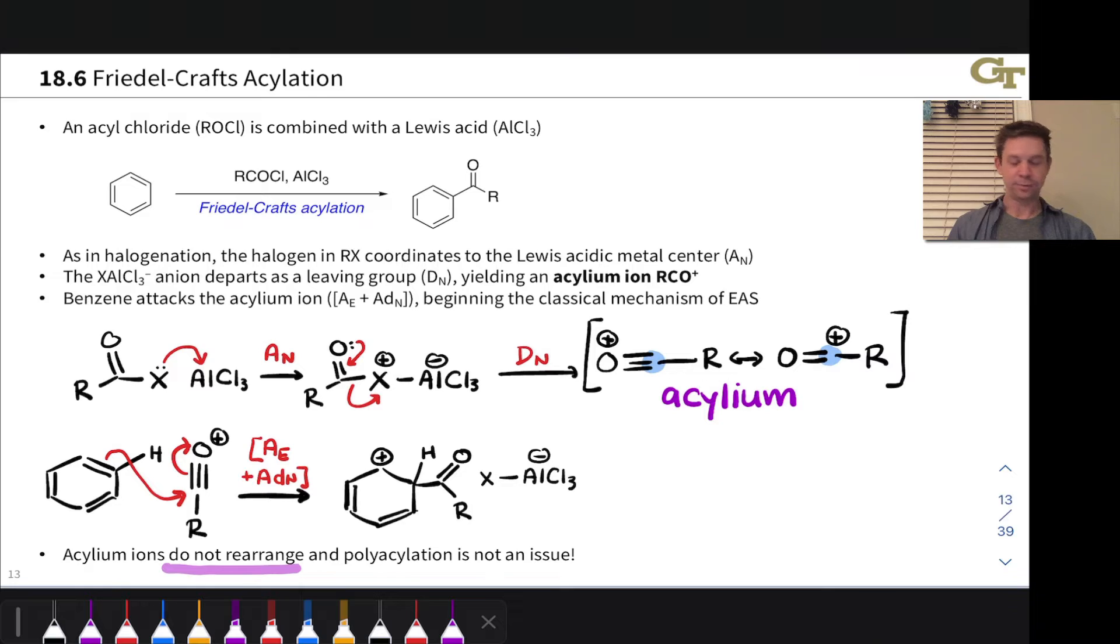with the CO pi electrons headed up to oxygen. In any event, we get an arenium ion naturally with an acyl group linked to the saturated carbon derived from the acylium ion and the typical positive charge.